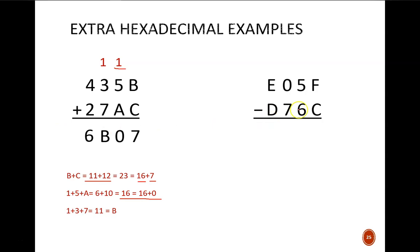Now for the subtraction. F minus C in hexadecimal is 15 minus 12 in decimal. So the difference is 3. For 5 minus 6 we need a carry. So 5 becomes 1 5 which means 21 in decimal. 21 minus 6 gives 15 and we write the 15 as an F.